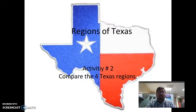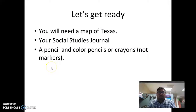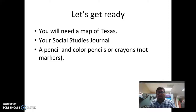Activity number two is comparing the four Texas regions. So let's get ready. You will need a Map of Texas, Social Studies Journal, pencil and color pencils and crayons — not markers. Push pause when you're ready, then let's continue.